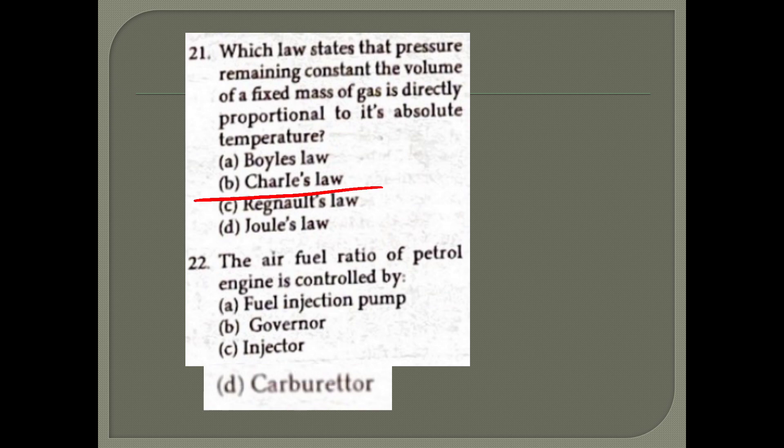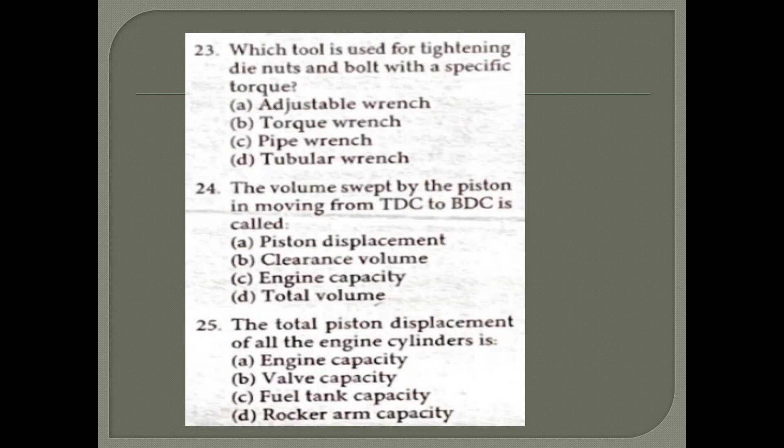23rd question: The air fuel ratio of a petrol engine is controlled by carburetor. 24th question: Which tool is used for tightening nuts and bolts with a specific torque? It is option B - torque wrench.